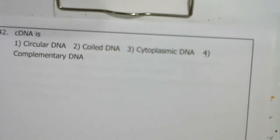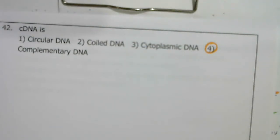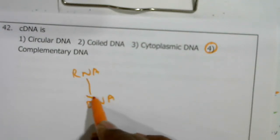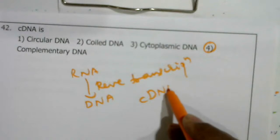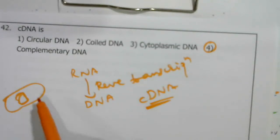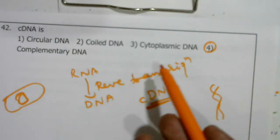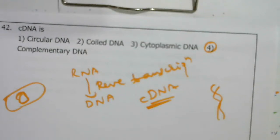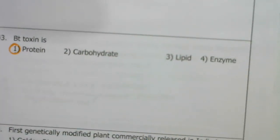cDNA is complementary DNA — when DNA is produced from RNA through reverse transcription using reverse transcriptase enzyme. In prokaryotic bacteria, circular DNA is present in organelles like mitochondria and chloroplasts. Wild-type DNA and cytoplasmic DNA are present in prokaryotic cells without a definite nucleus.